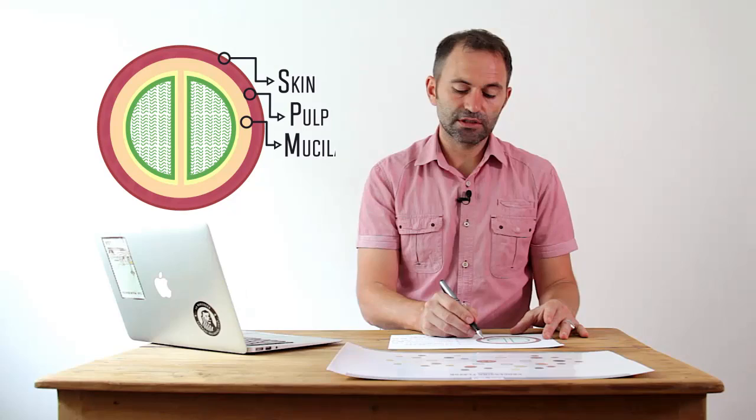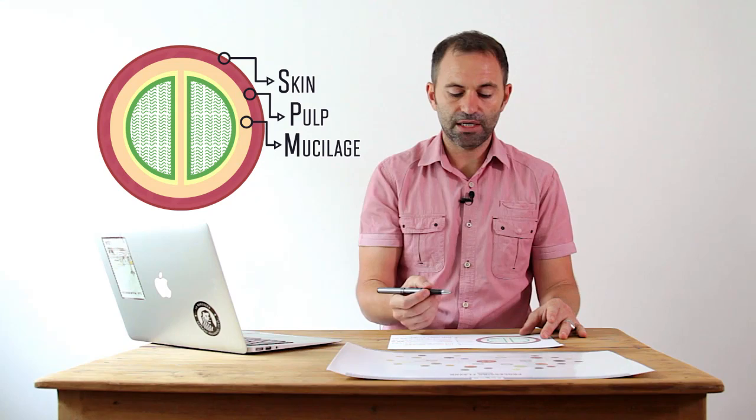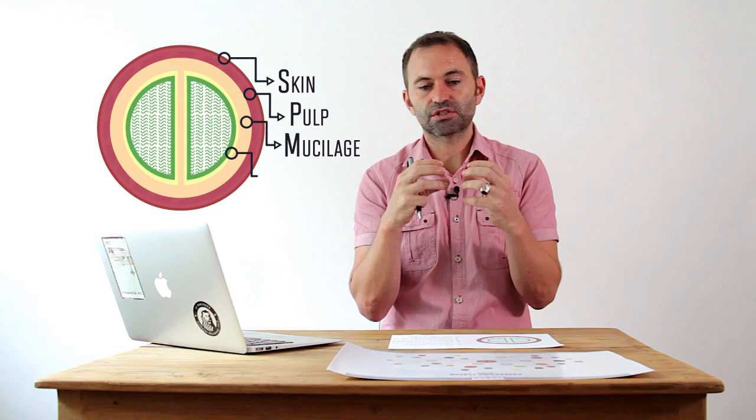This mucilage is sometimes called the pectin layer. It's made mainly of pectin. Then we have this hard shell called parchment, and inside the parchment there's a thin layer called silver skin, and inside that is the bean, which is also the seed.